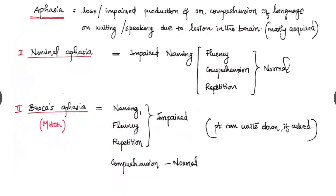Broca's aphasia is the motor aphasia. Motor means there is difficulty or defect in production of the speech. Where naming, fluency and repetitions are impaired but the comprehension is normal. The patient can understand the question. And the patient cannot answer by himself but if asked the patient can write down. And this is how we distinguish the Broca's aphasia from Wernicke's aphasia.